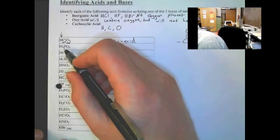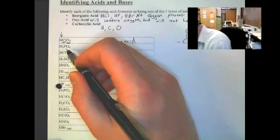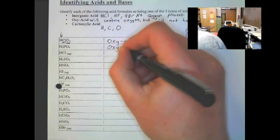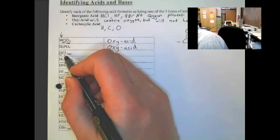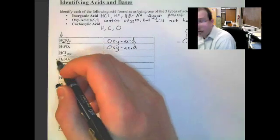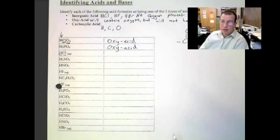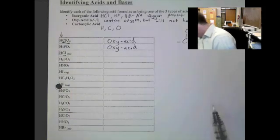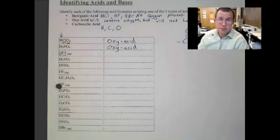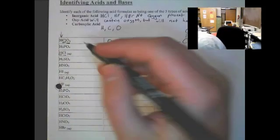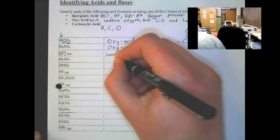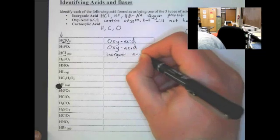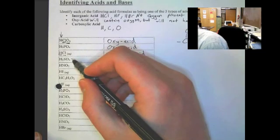Next, very similar. It has hydrogen out front. It's got an oxygen, but no carbon. Oxy acid. This one, HCl. This is an inorganic acid. Why? Because it has hydrogen out front. It's got one single non-metallic element after it, what we would call halogen. So, what we're going to do is look through this and say inorganic acid. Again, it also does not have oxygen.